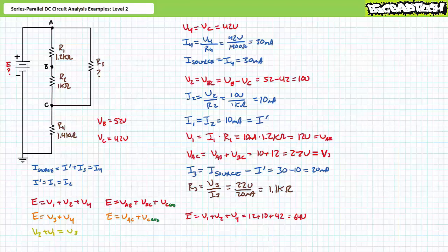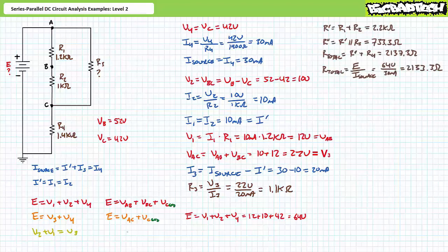Similar loops, such as V3 plus V4, yield similar values. As another means of checking our work, R1 and R2 in series yields R single prime of 2.2 kilo ohms. Combining R single prime and R3 in parallel yields R double prime of 733.3 ohms. Finally, R double prime in series with R4 yields a total resistance of 2133.3 ohms. Total resistance equals supply voltage divided by source current, which similarly yields 2133.3 ohms. I've got a reasonable degree of confidence our answers are correct, and we can move on to the final illustrated example.